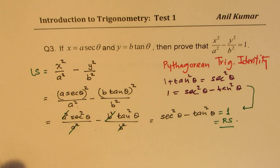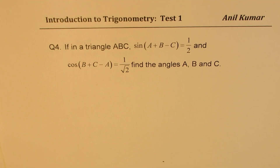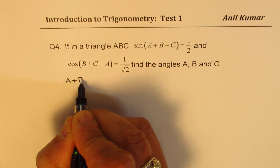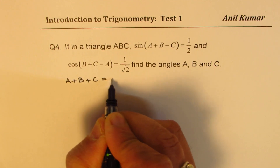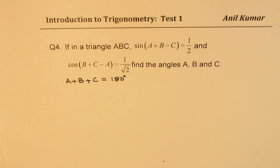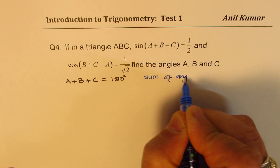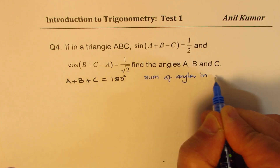Let's take up question number four. In a triangle ABC, the very important property you should know is that a plus b plus c equals 180 degrees — this is the sum of angles in any triangle. This is important information which is missing from the equation, and knowing it helps us solve the question. We get one equation from the properties of the triangle, and the other two from the given conditions.